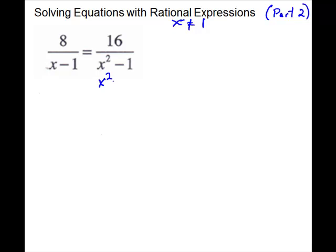We have x squared minus 1 equals 0. Move the 1 over, so x squared equals 1. Take the square root of both sides, so x equals plus or minus the square root of 1. The square root of 1 is 1, so x equals plus or minus 1. Remember, we're finding exclusions, so positive 1 and negative 1 both have to be thrown away.